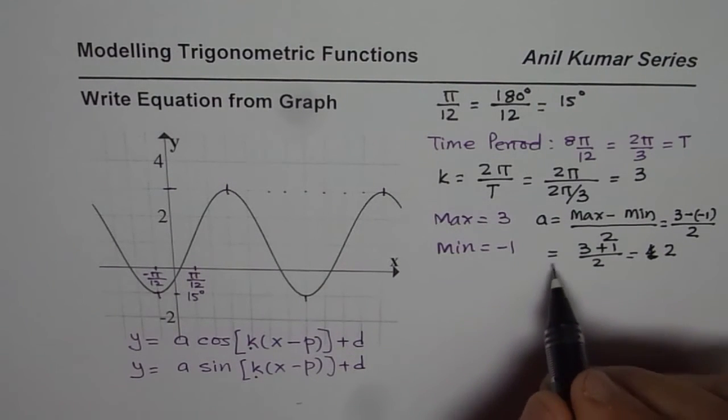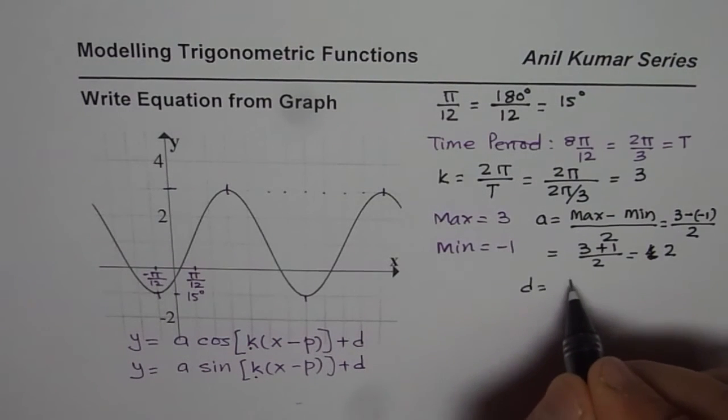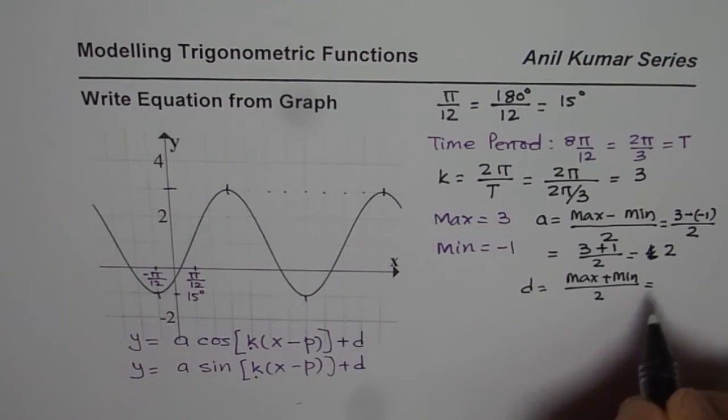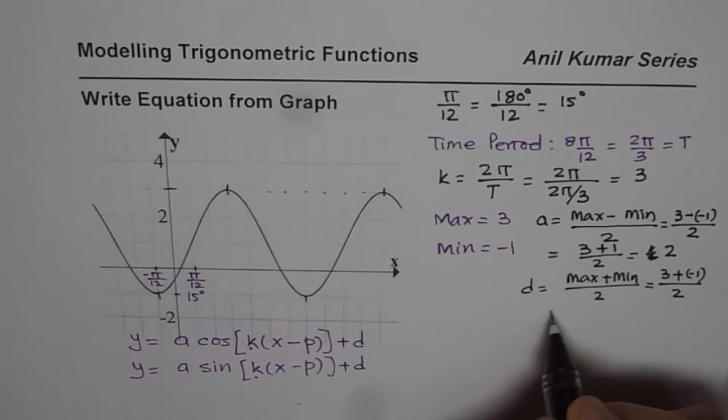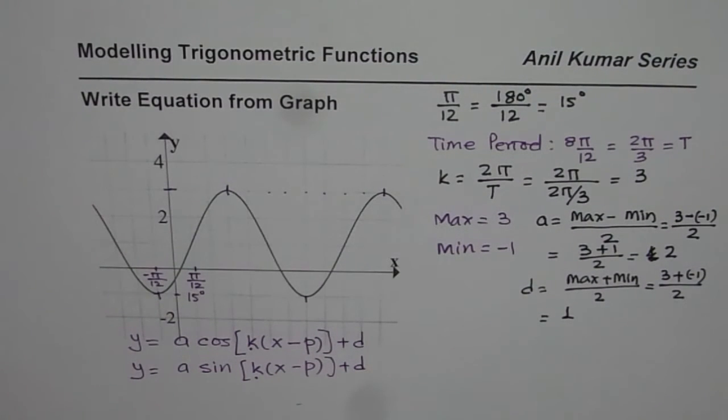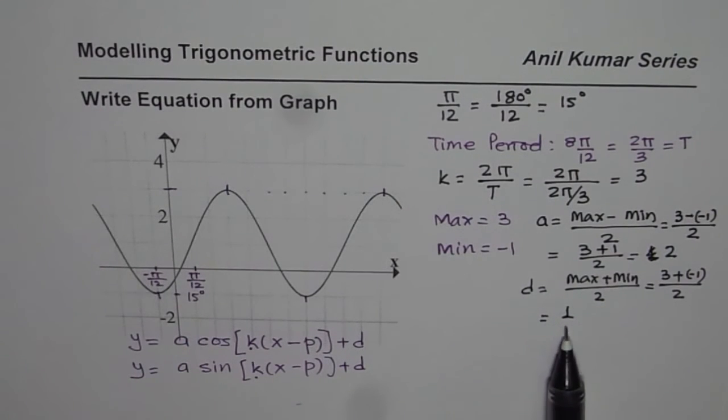To find d, which is kind of average, we have to do maximum plus minimum divided by 2. In this case maximum is 3 plus minimum of -1 divided by 2 gives you a value of 1. So we get a = 2 and d = 1.